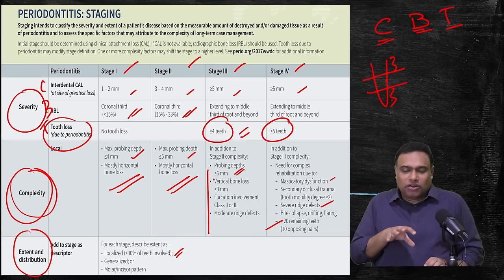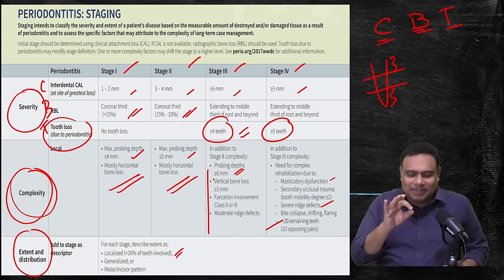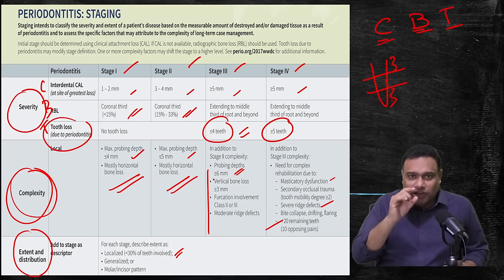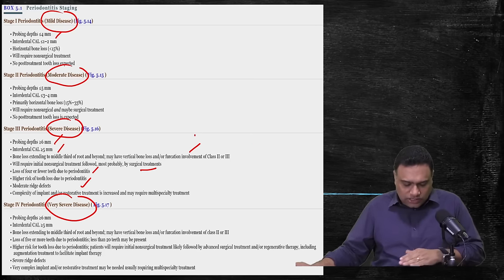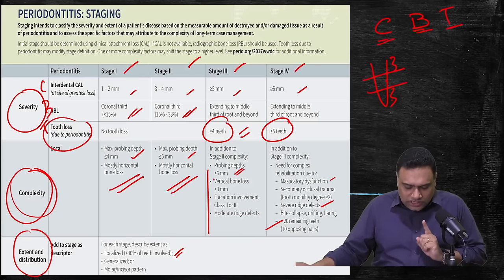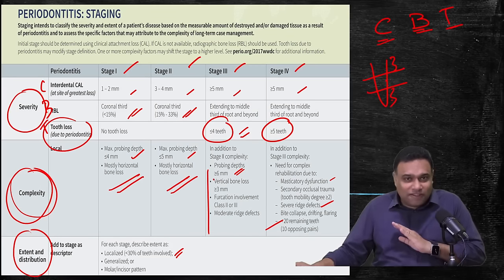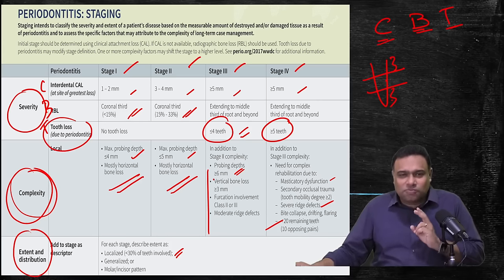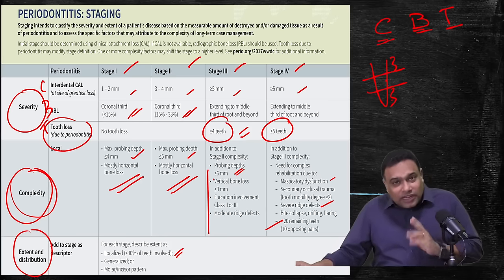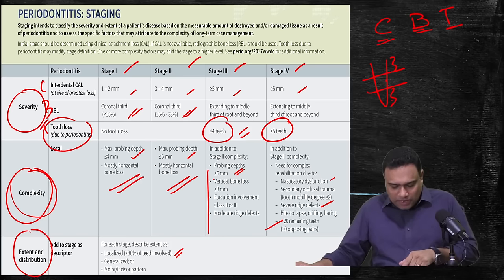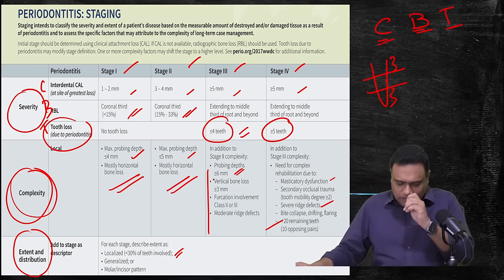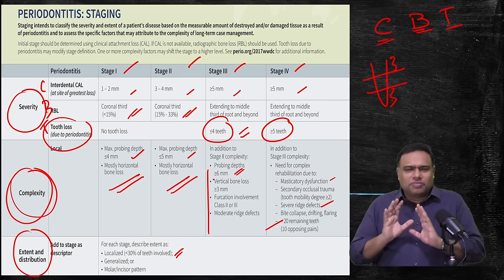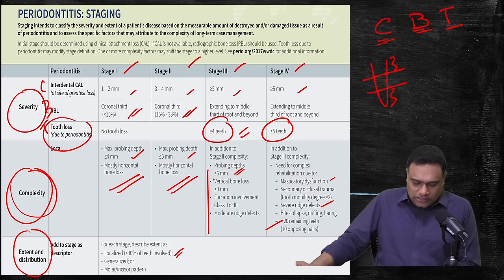I'm hoping that your understanding of periodontal classification and suturing is clearer now. For periodontal classification, be very thorough with staging. In the 14th edition of Carranza, Stage 1 is mild, Stage 2 moderate, Stage 3 severe, Stage 4 very severe. Remember: in severity you have CBT — clinical attachment level, bone loss, tooth loss — and probing depth comes under complexity. Probing depth thresholds are: less than 4 mm (Stage 1), less than 5 mm (Stage 2), and 6 mm and above for Stages 3 and 4. Please go through the tabular columns for staging and grading one more time.